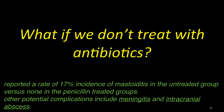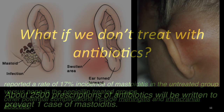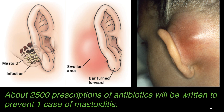What would happen if we don't treat with antibiotics for otitis media? One study reported a 17% incidence of mastoiditis in the untreated group versus none in the penicillin-treated group. Other potential complications include meningitis and intracranial abscesses. On the flip side, about 2,500 prescriptions of antibiotics will be written to prevent one case of mastoiditis. As you can see in the picture, mastoiditis is an inflammation of the mastoid, the bone posterior to the ear.